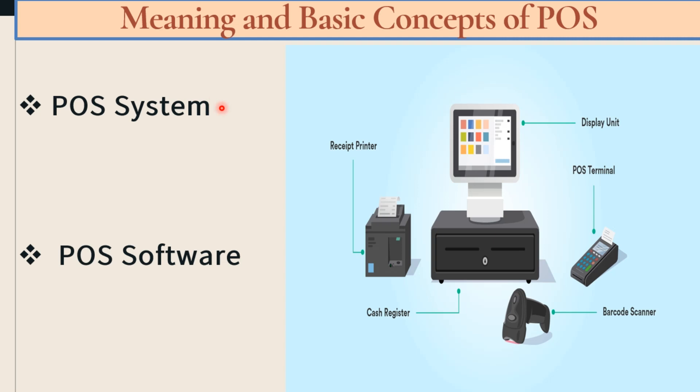The second concept is point-of-sale software. Software is a type of application. With the help of that particular software, we can give a command to the hardware to do a specific task — we can give a command to the visible machine to perform a specific task. That is what the software is.